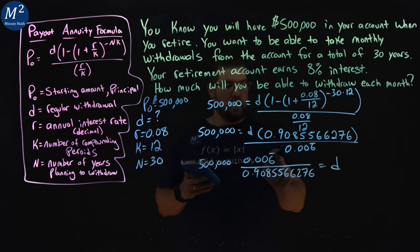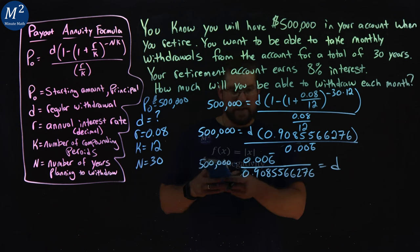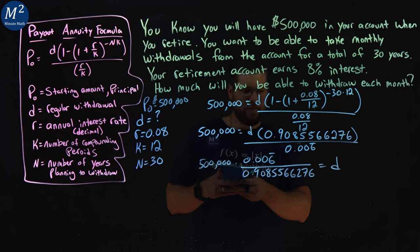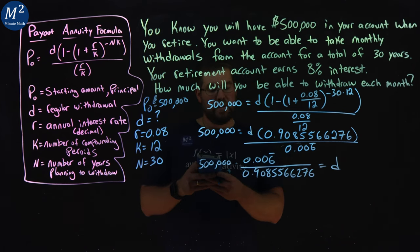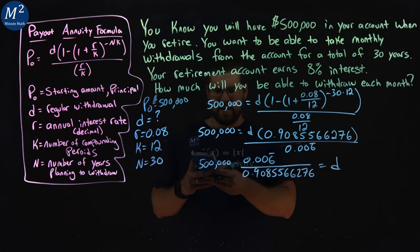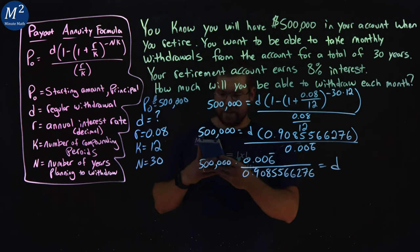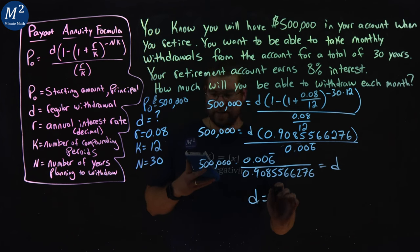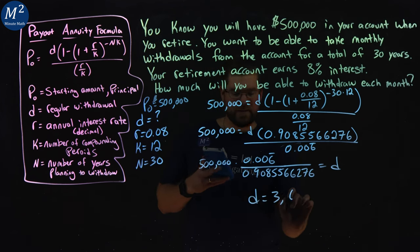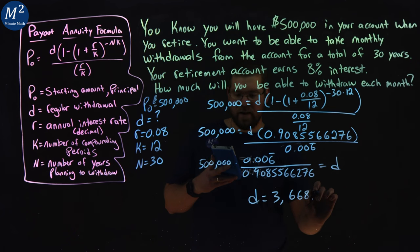Multiplying that out, 0.006 repeating, divided by this decimal, 0.9085566276, gives me 0.007 with 337, and multiply that by 500,000, and we get a D value by itself of $3,668.82 rounded.